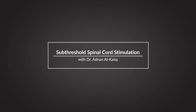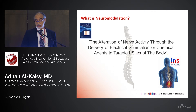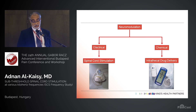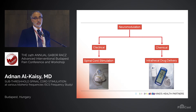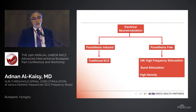Neuromodulation is defined as the alteration of nerve activity through the delivery of electrical stimulation or a chemical agent targeted to a specific site of the body. Broadly speaking, it can be divided into chemical, in the form of intrathecal drug delivery systems, or electrical, like spinal cord stimulation or deep brain stimulation.